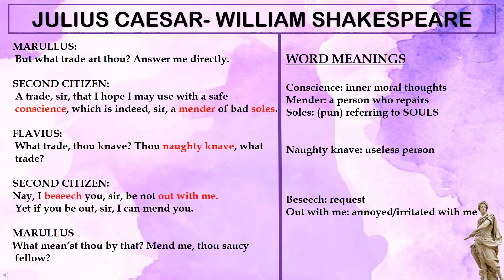The second citizen replies that if he has a clear conscience — if his inner thoughts and actions are moral — then he is a 'mender of souls.' Here, there is a pun on the word 'soles': spelled S-O-L-E-S, relating to his profession as a cobbler who repairs the soles of shoes, while also hinting at S-O-U-L-S, the souls of people. He is playfully teasing Marullus.